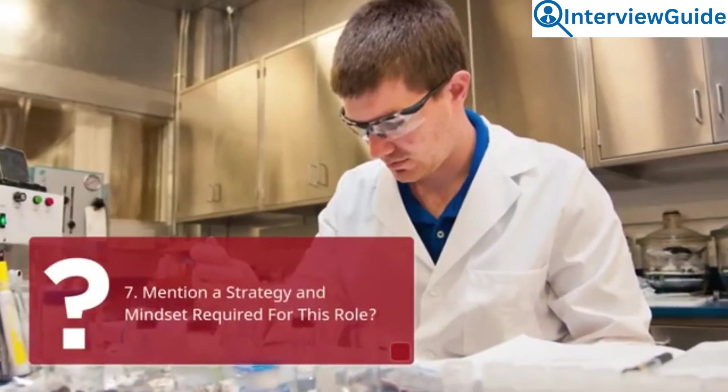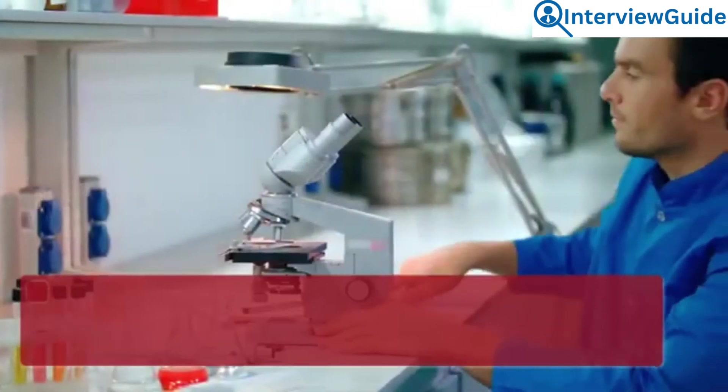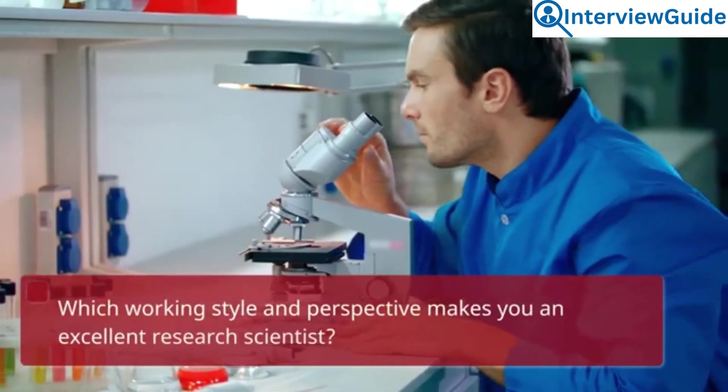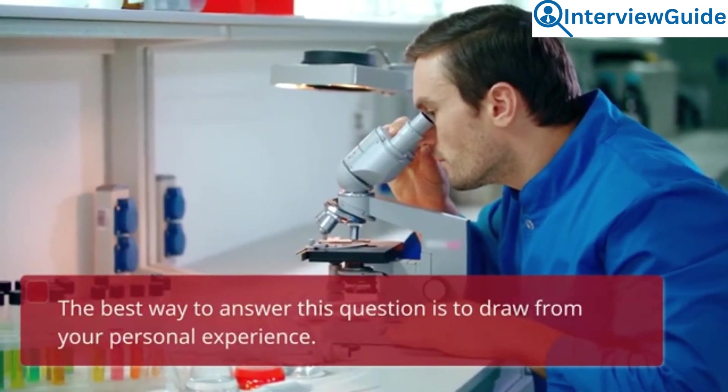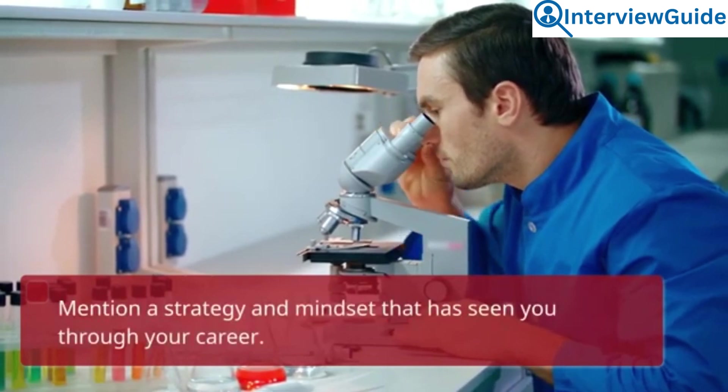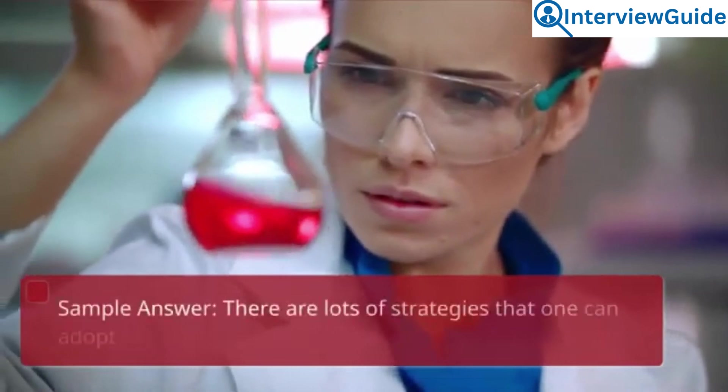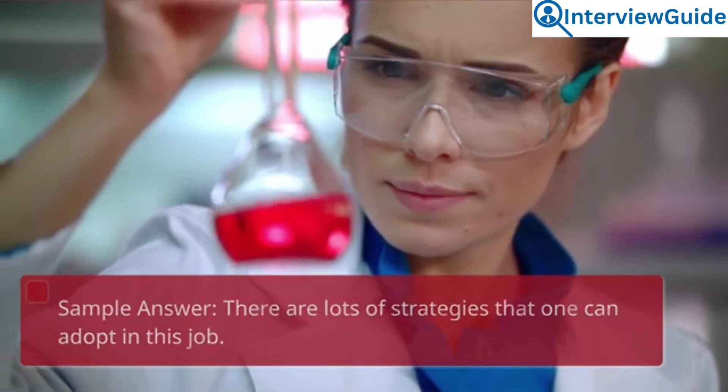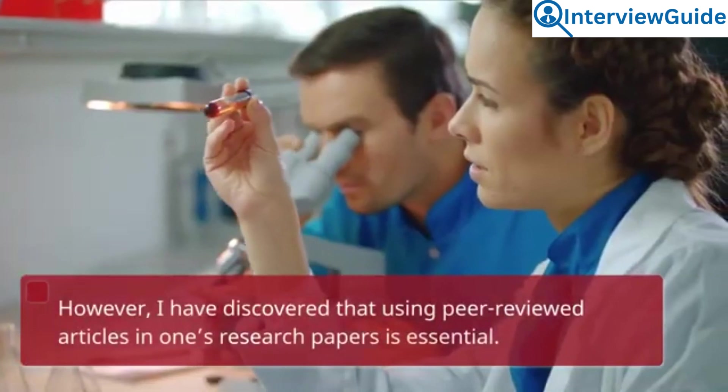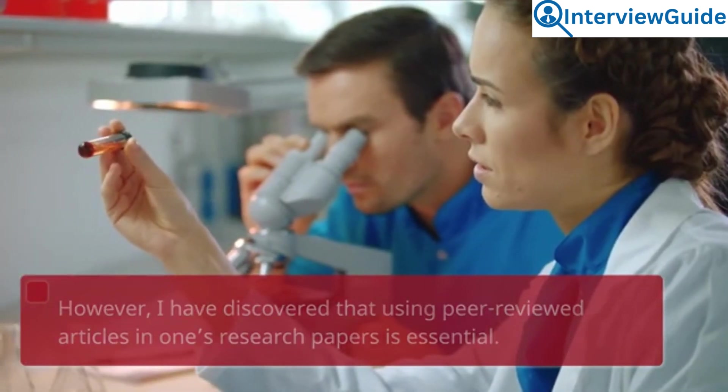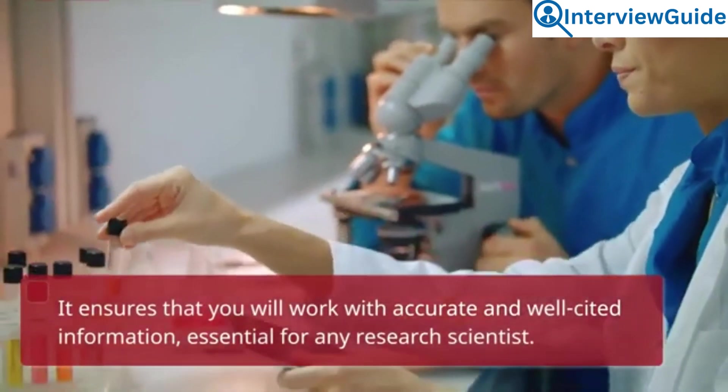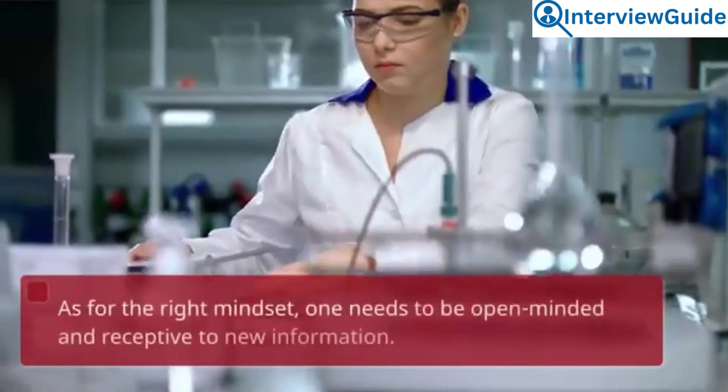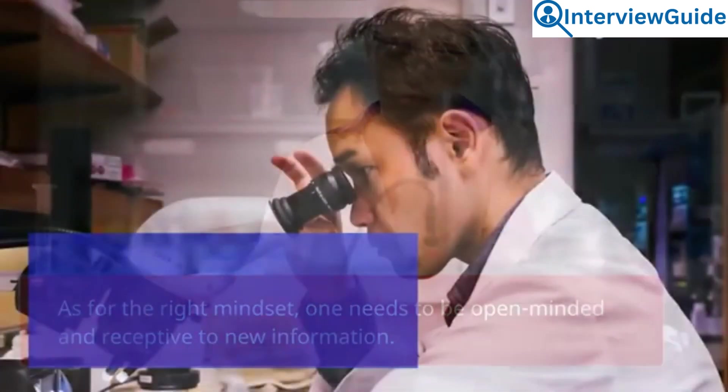Question 7: Mention a strategy and mindset required for this role. Which working style and perspective makes you an excellent research scientist? The best way to answer this question is to draw from your personal experience. Mention a strategy and mindset that has seen you through your career. Make sure that you can relate them to the role if asked. Sample answer: There are lots of strategies that one can adopt in this job. However, I have discovered that using peer-reviewed articles in one's research papers is essential. It ensures that you will work with accurate and well-cited information, essential for any research scientist. As for the right mindset, one needs to be open-minded and receptive to new information.